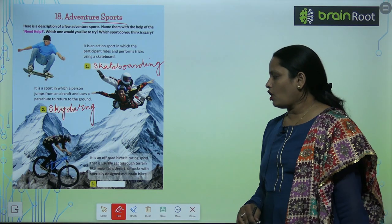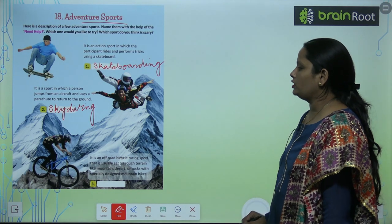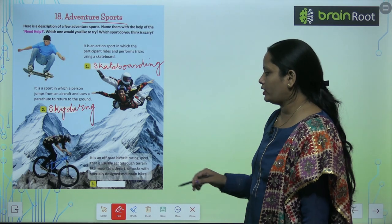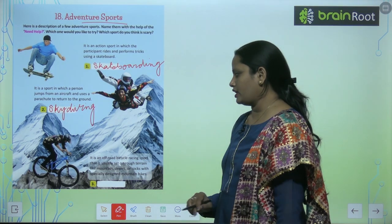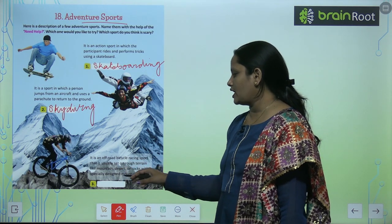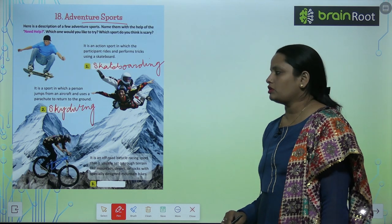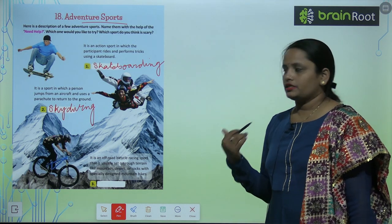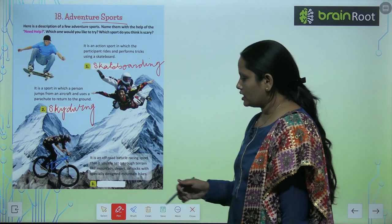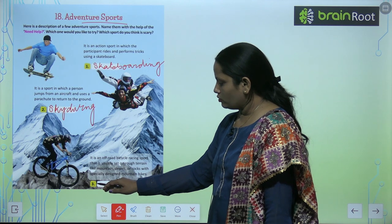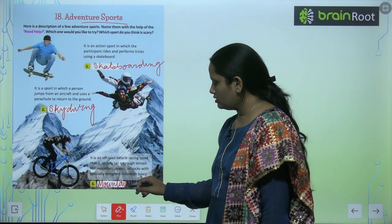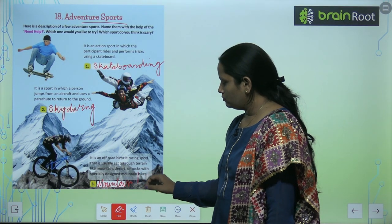Next, it is an off-road bike racing sport. ये off-road means road से अलग bicycle racing sport है. That is usually set on rough terrain like mountain, desert or rocks with specially designed mountain bikes. इसमें special तरीके के mountain bikes है, उनकी मदद से ride किया जाता है, sports किया जाता है. And this is called mountain biking.